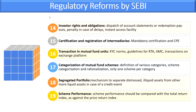For segregation of portfolio, SEBI has laid down provisions related to the mechanism to separate distressed, illiquid assets from other more liquid assets in case of a credit event. In the economy, some company may default on their credit norms. In such cases, if a mutual fund scheme has invested in that company, they will separate the distressed asset from other liquid assets — that is called segregation of portfolio.